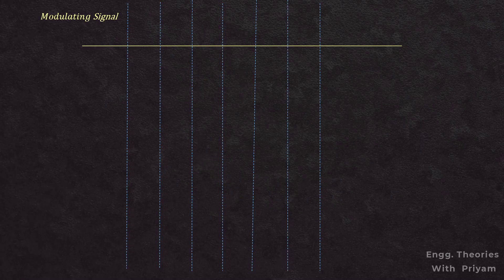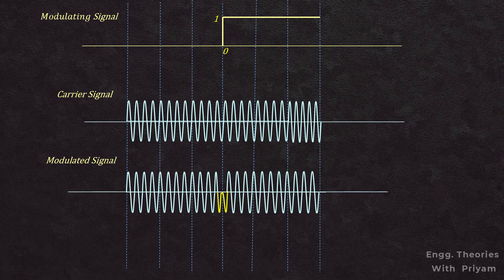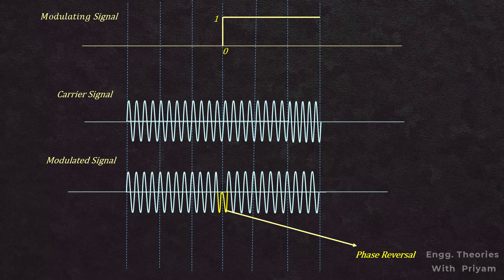For phase modulation with the unit step signal, while t is less than 0, there is no change in the phase of the modulated signal. When t equals 0, the modulating signal goes from 0 to 1 and the phase of the modulated signal gets reversed. This phase modulation can be plotted by using the differentiated version of the modulating signal m(t).